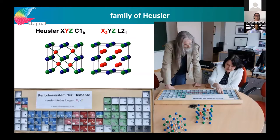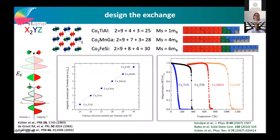My main interest is in Heusler compounds, which are also ferromagnets — especially the full Heusler compounds. Heusler compounds have a very exciting electronic structure: you can make some of them as non-magnetic semiconductors with magic electron numbers, and if you add more electrons you can make them half-metallic ferromagnets, which are metallic in one spin direction and have a gap in the other. They follow simple electron counting rules.